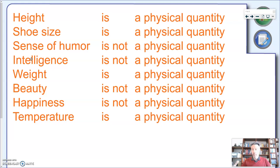On the other hand, how beautiful you are, how pretty you are, it's not a physical quantity. The degree of happiness you have—already talking about degree of happiness—it's really quite imprecise, so it's not a physical quantity. And your body temperature is of course a physical quantity.